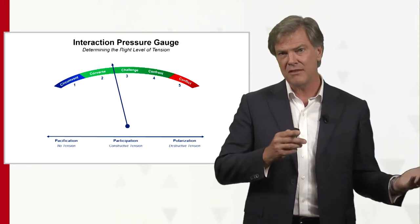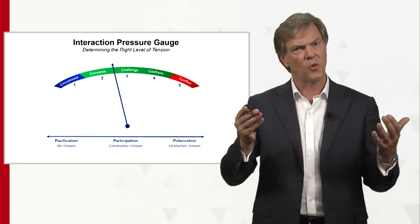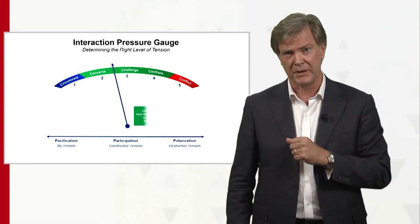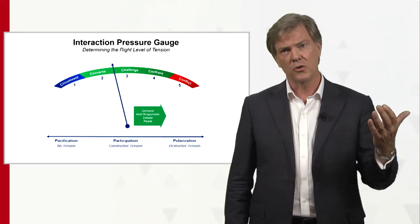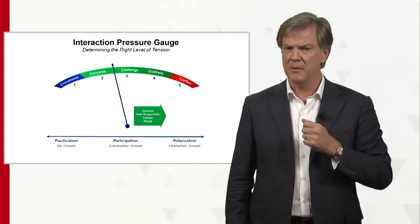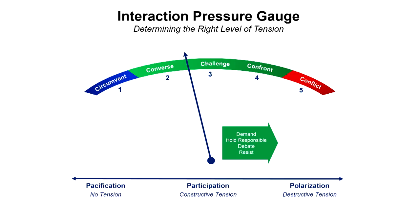You see that this model helps you think about what levels of pressure are going to be beneficial. If I go to the side of more challenge and more confrontation, it's useful because I'm demanding things — sometimes I need to do that, I'm holding people responsible, trying to get into a debate, or resisting what they want from me. But I'm constantly thinking about avoiding condemning the other, blaming the other, stopping listening, or getting into a fight.